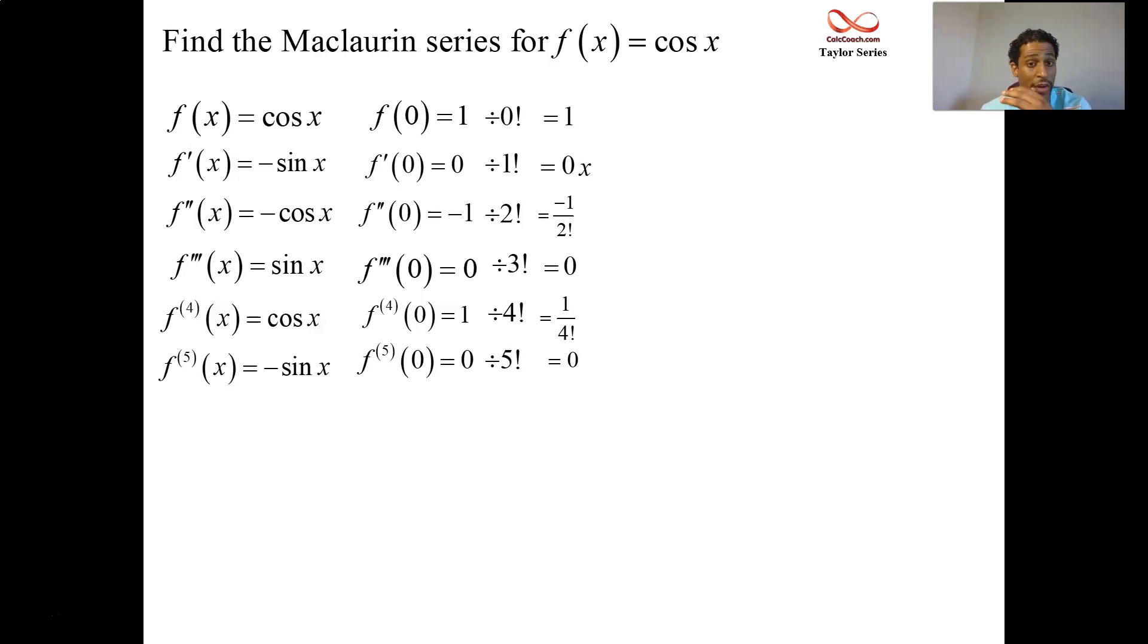Our job is to be able to find the pattern. Now, these guys are the coefficients on x. And so there is no x term. There is no cubed term. There is no fifth degree term. There's a constant term, 1. And then we have minus 1 over 2 factorial times x squared. No cubic term. Then 1 over 4 factorial times x to the fourth. And then we have no x fifth term. We only have the even powers.